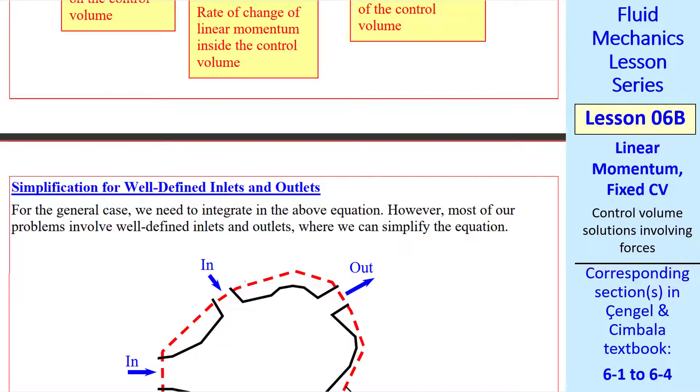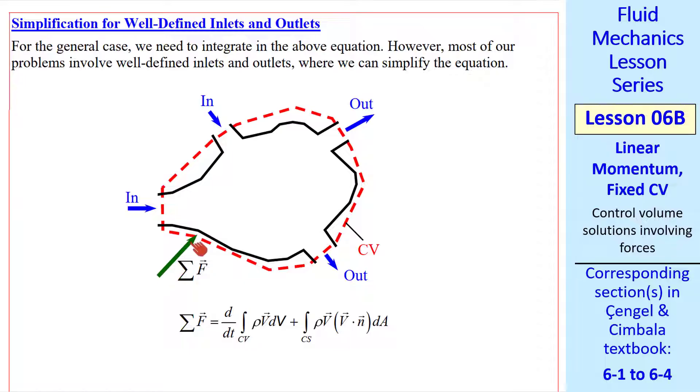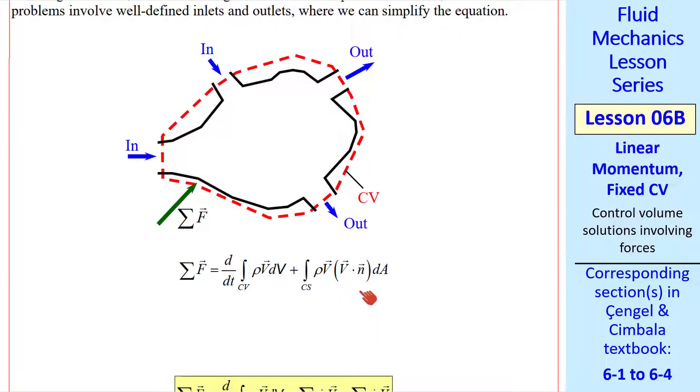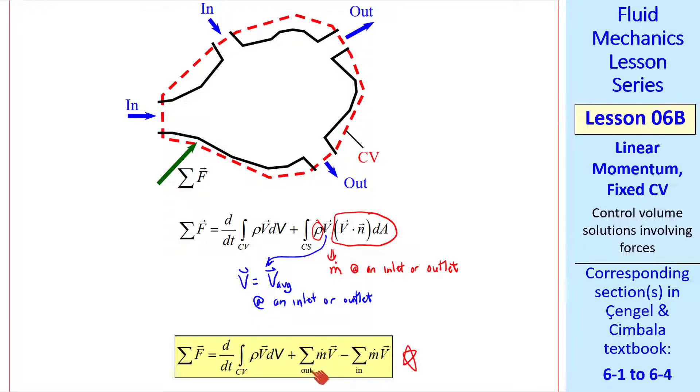Now let's simplify for well defined inlets and outlets, to avoid having to integrate all the time. Since in most of our problems we have something like this with well defined inlets and outlets, put a control volume slicing through all of those, and we have some force that we're trying to calculate typically. So I repeated the equation from above, and let's consider the control surface integral. This density times v dot nda at a given inlet or outlet becomes m dot at an inlet or outlet. There's also a vector velocity here. That's the average velocity at an inlet or outlet. But we typically drop the avg subscript for convenience. So our equation becomes this, where we've replaced the control surface integral by these terms. As we've mentioned several times, the signs take care of themselves. The term is positive for outflows and negative for inflows, so we put the negative sign here.